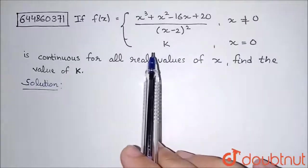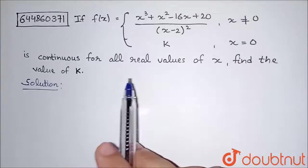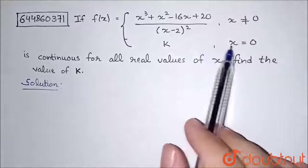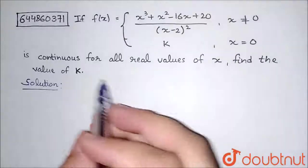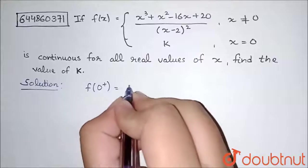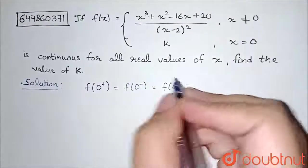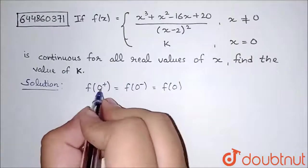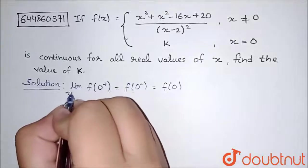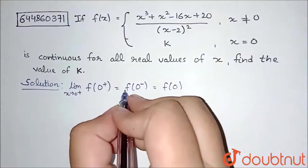We are given that f(x) is continuous, so we need to find the value of k. Since k is defined at x equal to 0, and the function is continuous for all real values of x, we can write that f(0+) equals f(0−) equals f(0). Here, f(0+) means the limit as x tends to 0 plus.